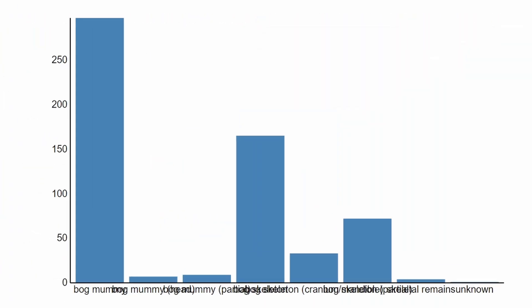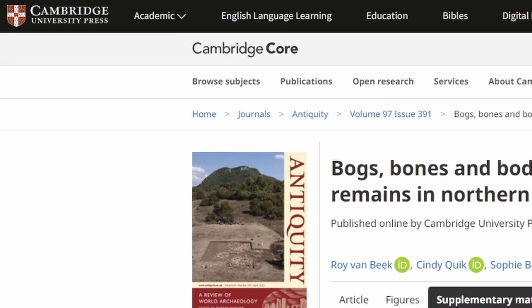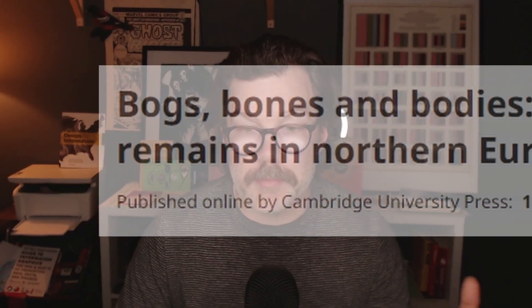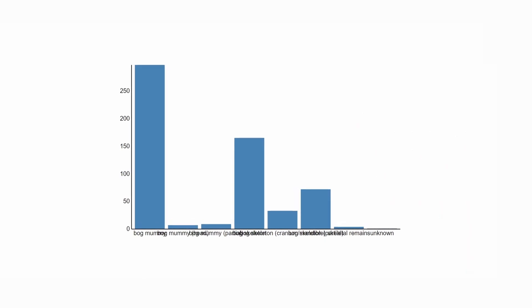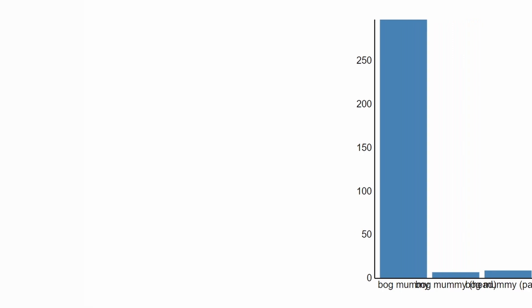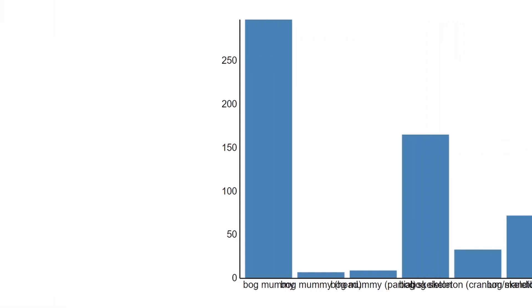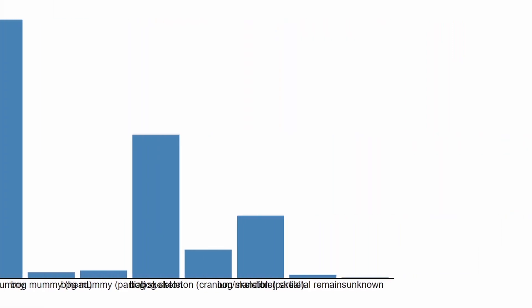This is a column chart based on this study from Cambridge University Press, Bogs, Bones, and Bodies, the Deposition of Human Remains in Northern European Myers. A link to where you can get the data yourself is included in the description below. Now, you could throw this data into Tableau, ggplot, Power BI, or any other number of tools and likely get an initial chart that looks very similar to this.